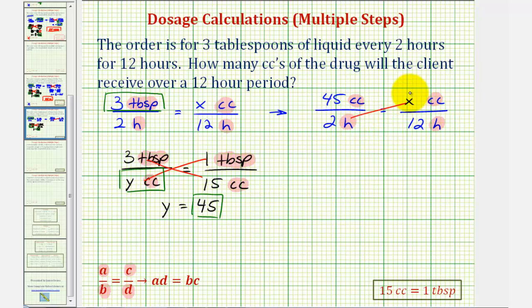Two times x must equal forty-five times twelve. Two x equals five hundred forty. Divide both sides by two, and we have x equals two hundred seventy. Which means two hundred seventy cc's will be received over the twelve hour period.